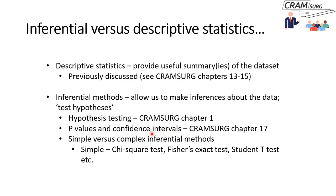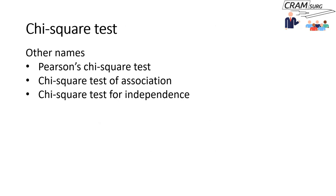Hypothesis testing was in CRAM search chapter one. P-values and confidence intervals were discussed in CRAM search chapter 17. When we talk about inferential methods, there are straightforward simple methods like the chi-square test and Fisher's exact test, and some complicated methods. We thought it might be useful for trainees to discuss some simple inferential methods they can refer to when called upon to do these tests. Today we're going to discuss the chi-square test, also known as Pearson's chi-square test, the chi-square test of association, or the chi-square test of independence.